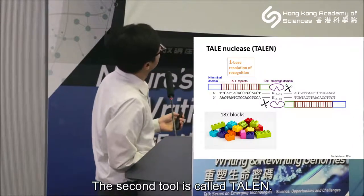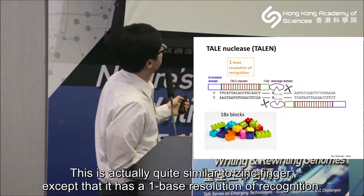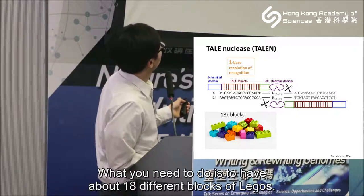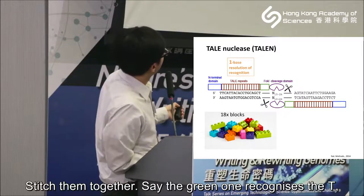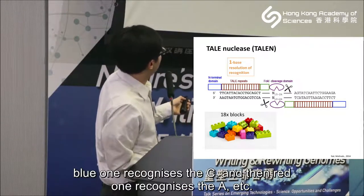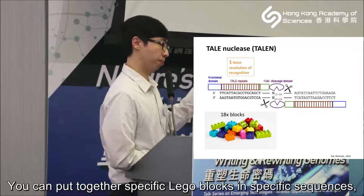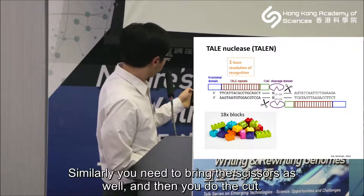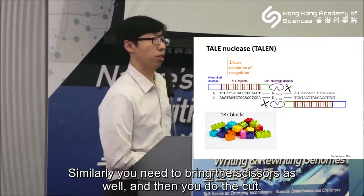The second tool is called TALEN, which is actually quite similar to Zinc Fingers, except that it has a one-base resolution of recognition. So here with 18 bases of DNA letters, you need about 18 different blocks of Legos stitched together — for example, the green one recognizes T, blue one recognizes C, red one recognizes A. You can put together specific Lego blocks in specific sequences to target whatever sequence you want. Similarly, you need to bring the nuclease to this desired cutting point and then make the cuts.